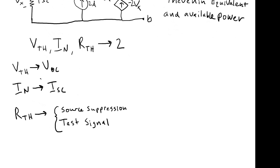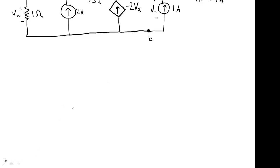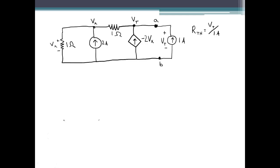In this problem, we're going to solve for the Norton current and the equivalent resistance using the test signal method. Here, I've sent a 1 amp test signal into the circuit, and we want to solve for the voltage across this test signal so that RTH equals that voltage divided by the 1 amp current. First, we need to deactivate the independent sources — we have a current source here, so we open it so no current flows through.